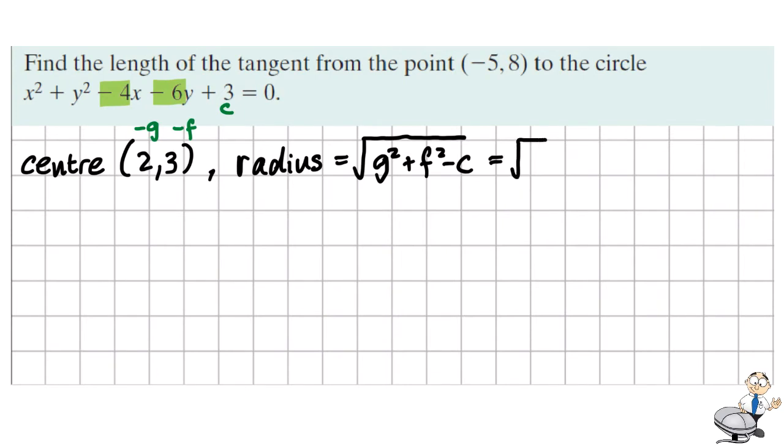So this becomes the square root of 2² + 3² - 3. This evaluates to be the square root of 10. So now we have the center and radius.